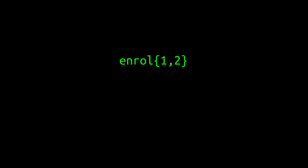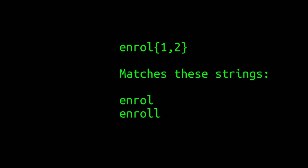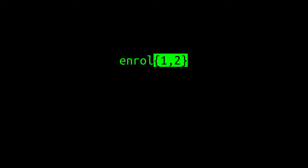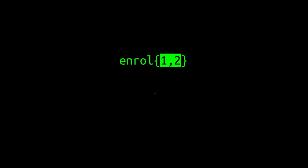Assume you need to write a regular expression that can match both spellings of the word "enroll." The word enroll can sometimes be spelled with one L or two Ls, depending on whether the author chooses to use British or American spelling conventions. Using this regex, you'll be able to match both spellings of enroll. In this case, the quantifier is the highlighted part you see here. This quantifier can be interpreted in English to mean: whatever came just before this quantifier, repeated anywhere from one to two times.